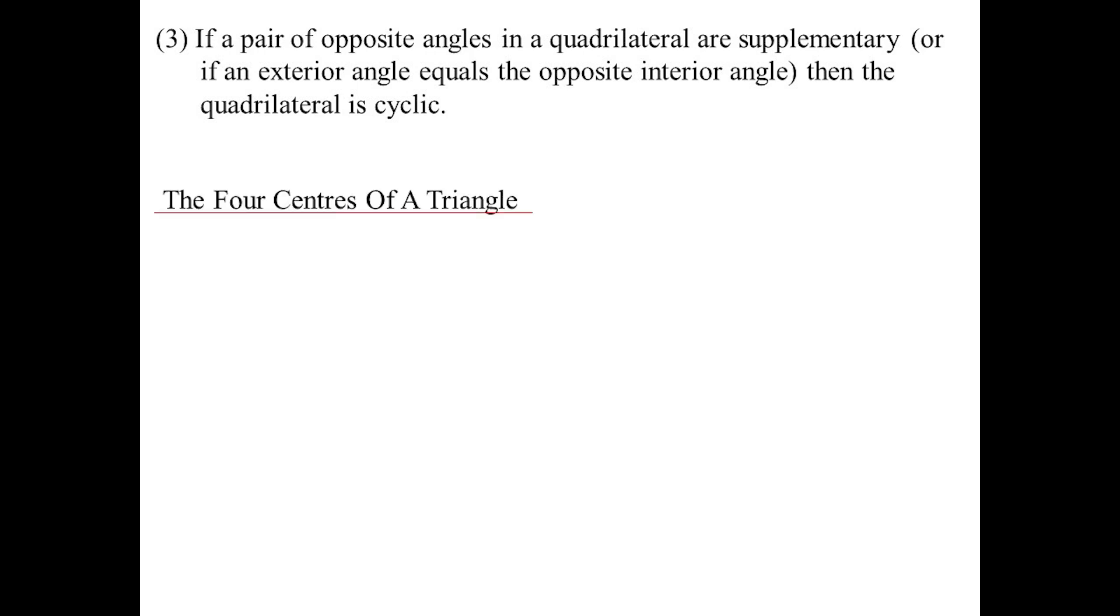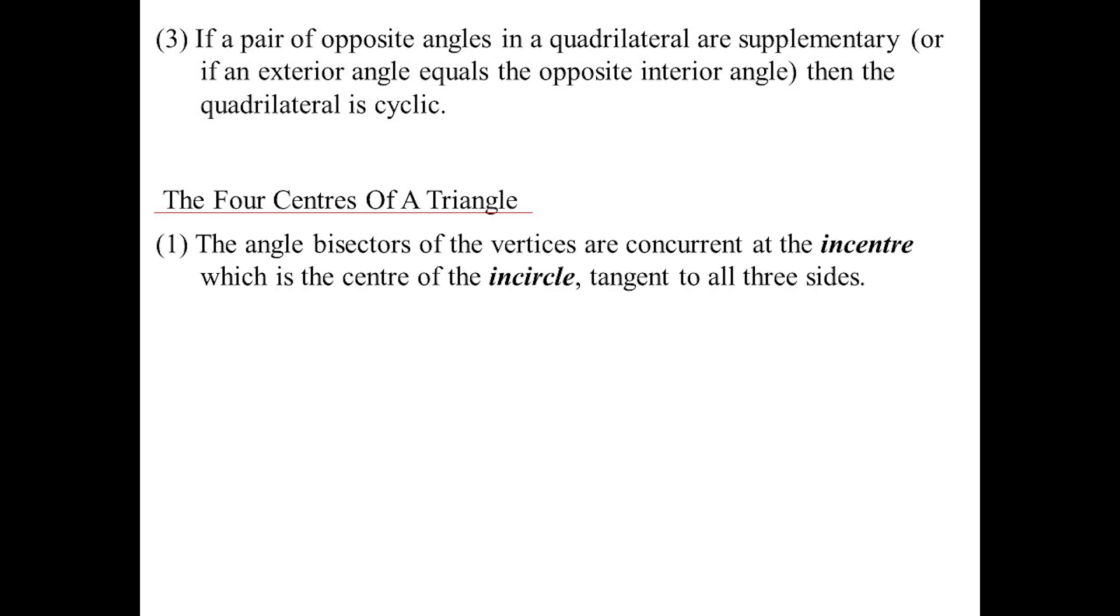The four centers of a triangle - the angle bisectors create what's called the incenter of a triangle, and that is the center of the incircle, the circle that's inside the triangle. What we've basically created there are three tangents, and we know the tangents from the external point joined to the center will create an axis of symmetry.